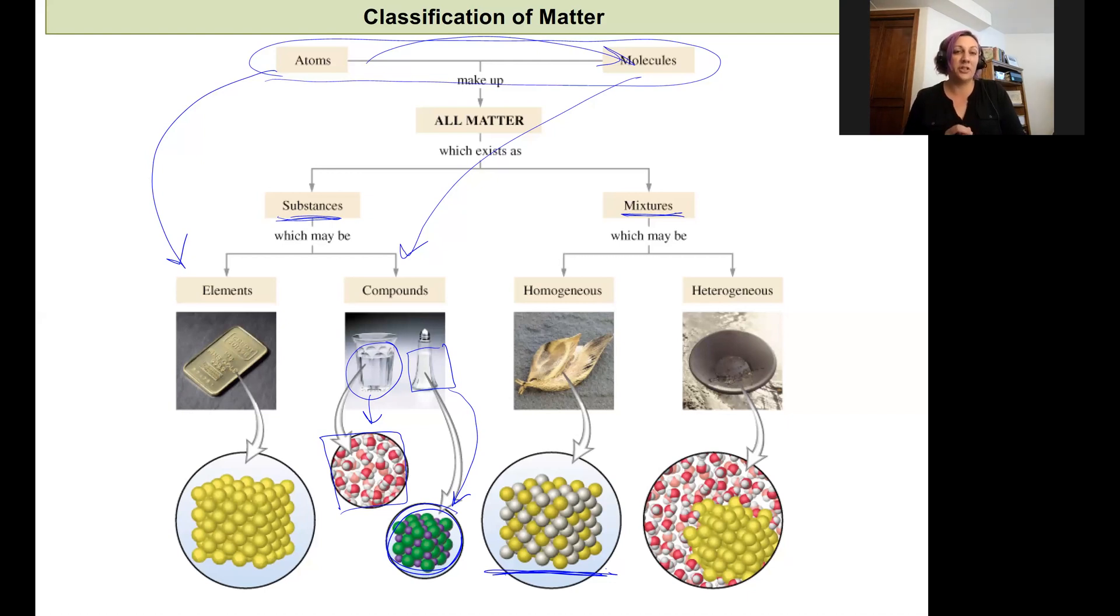A heterogeneous mixture, you can usually visually see the difference between the two or they're in different physical states. The example we have here for a heterogeneous mixture is like panning for gold. There's a mixture of water and there's a mixture of gold, which is Au, in this pan right here. They're forming a heterogeneous mixture that has two different phases. We have liquid water and solid gold mixed together, and we could probably see the flecks of gold and see the difference between that and the water.